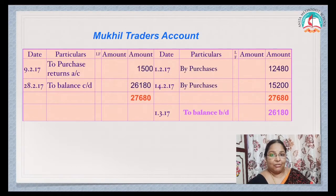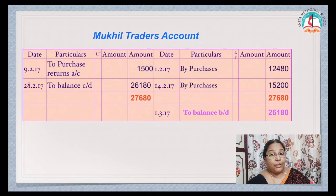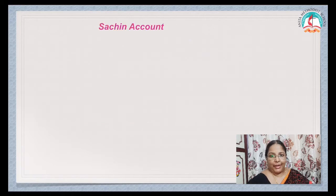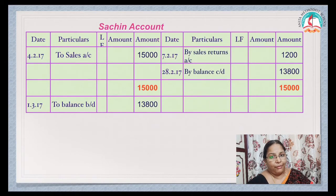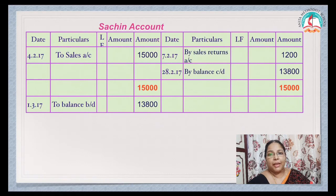Now the ledger accounts. Mukil Traders Account: by Purchases ₹12,480 and ₹15,200, but you also have Purchase Returns of ₹1,500. When you balance the account, the balance is ₹26,180. Sachin Account: by Sales ₹15,000 and by Sales Returns Account ₹1,200. When you balance the account, the balance is ₹13,800. Write the total on both sides — when you have a closing balance, you should also have an opening balance.